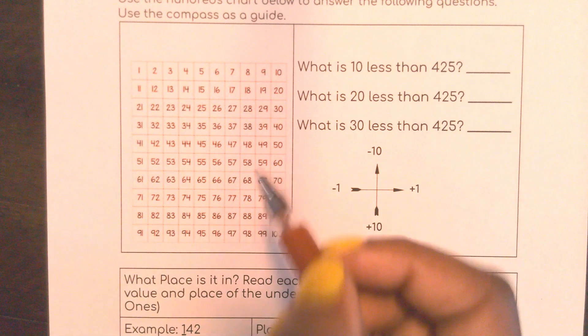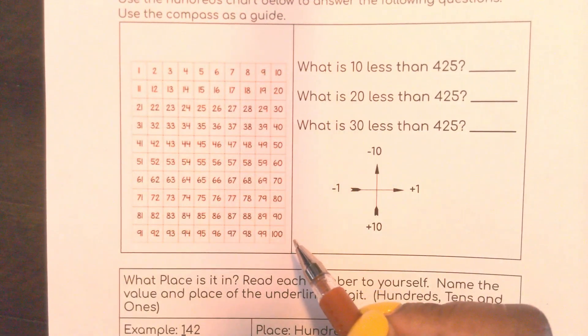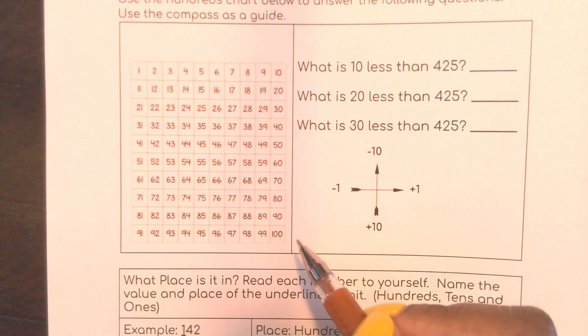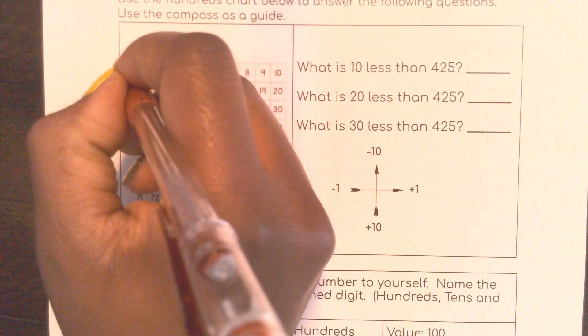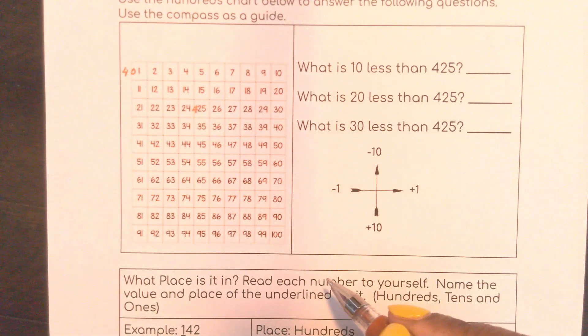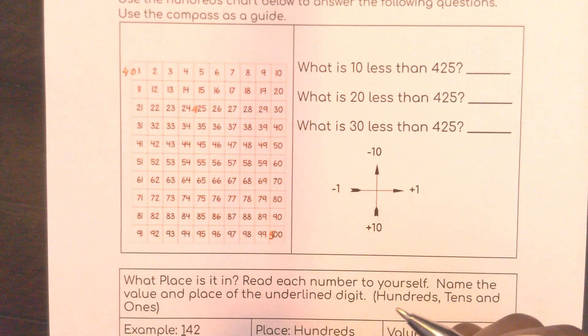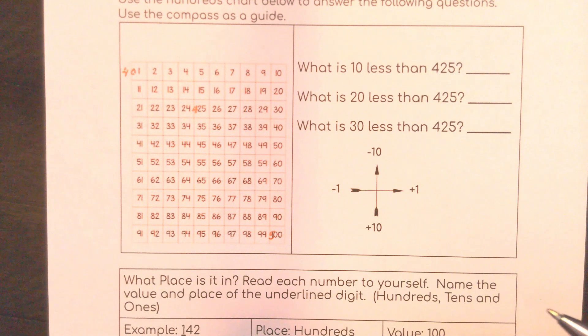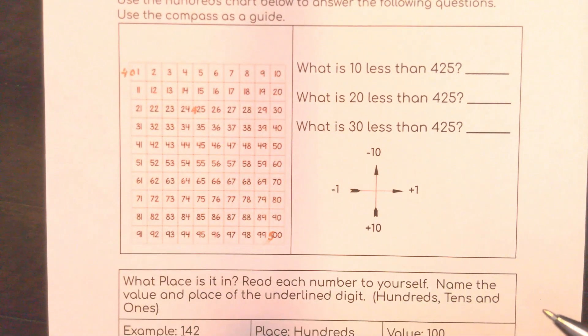So notice here we have a hundreds chart, but hundreds charts follow the same pattern for whatever hundreds that you're in. So if we were to put a 400 here and 400 all over this board, this will be 401 all over the board. It would follow the same pattern until we got to 500. So I can mentally turn this hundreds chart into any group of hundreds that I'd like to.